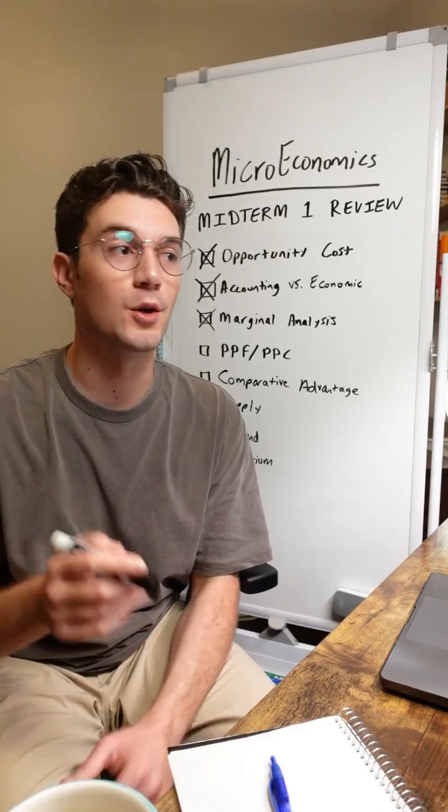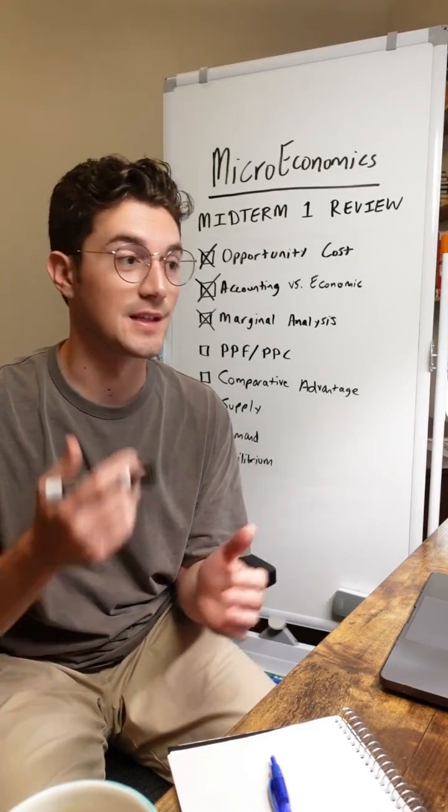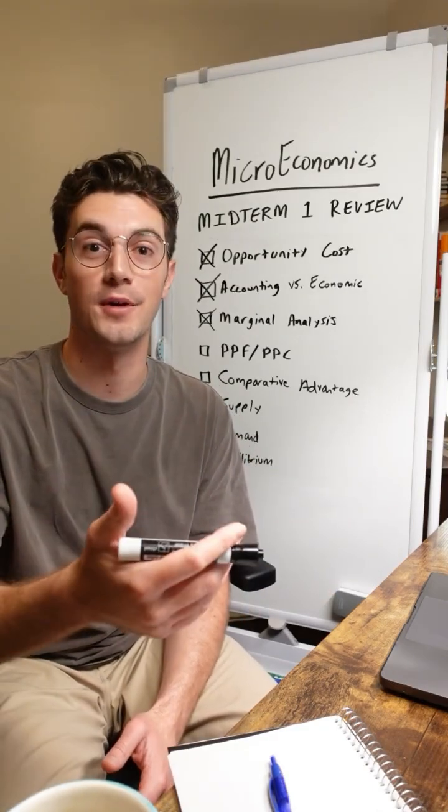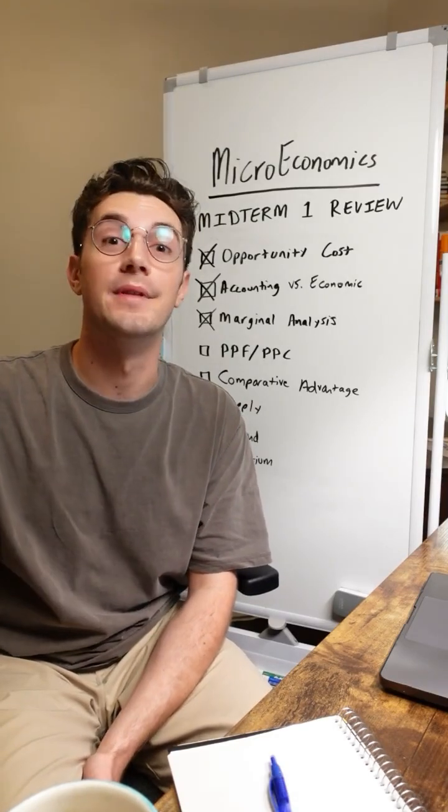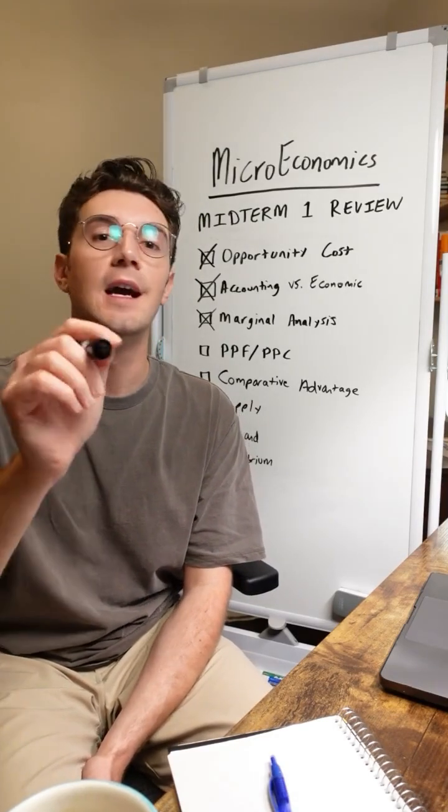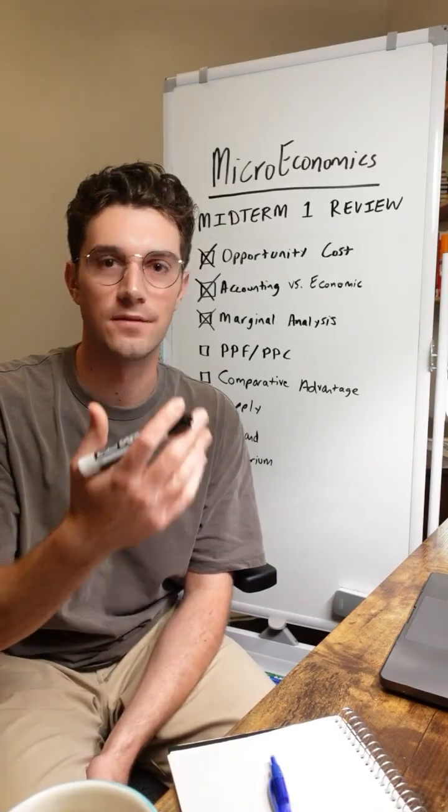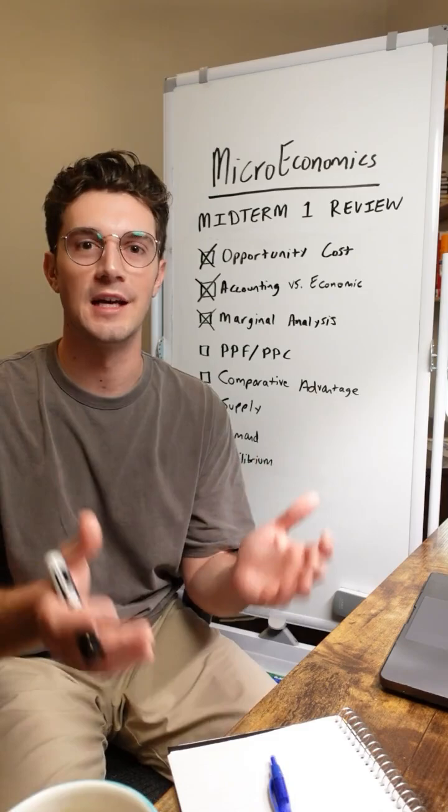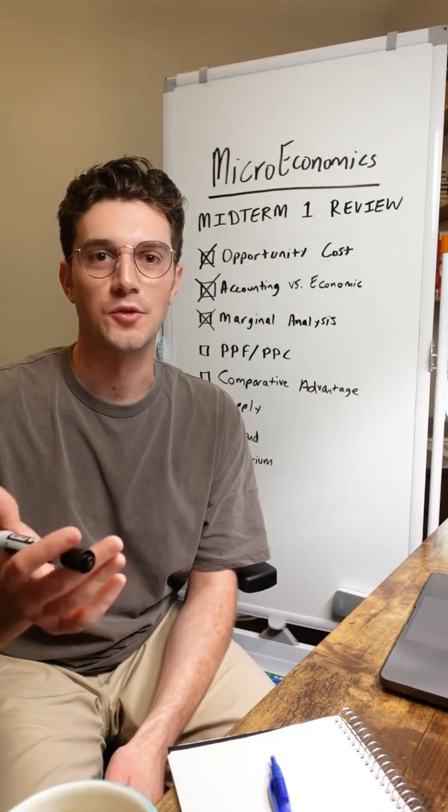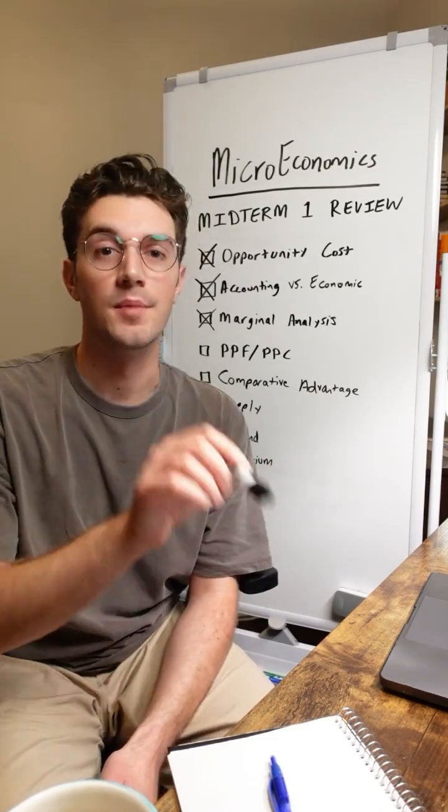By producing along that curve, we're being efficient with our resources. That's our maximum possible output of the two goods. Any points beyond the curve are unattainable. We can't output that many units of both goods. And any points within the curve are inefficient. We can bump up our output to rest along the curve and reach our maximum attainable output. We're under-utilizing our resources if we're ever producing within the PPF curve.